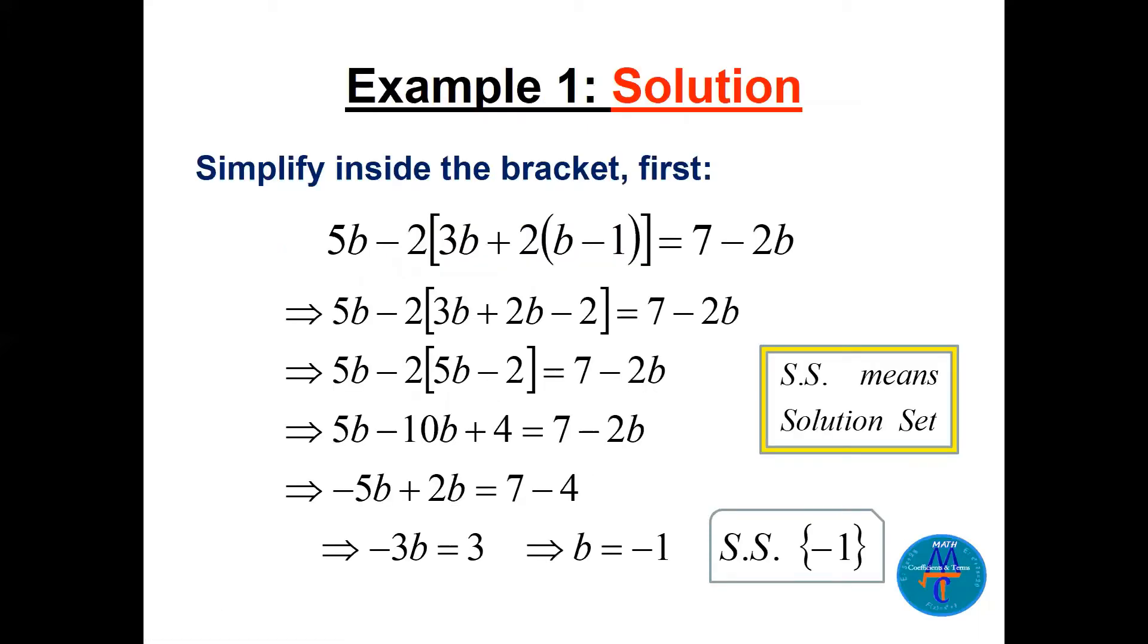So when we multiply here, you see 2b minus 2 with the 3b, it's 5b minus 2. Just multiply by minus 2, that's minus 10 plus 4. Minus 2 times minus 2 plus 4. See, 5b we did not touch, 7 we did not touch, minus 2b we did not touch. Until the end, we can combine like terms.